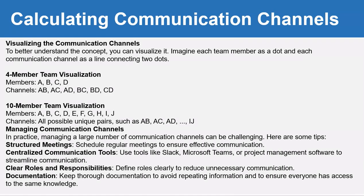To better understand the concept, you can visualize communication channels. Imagine each team member as a dot and each communication channel as a line connecting two dots. For a 4-member team (A, B, C, D), the channels are: AB, AC, AD, BC, BD, and CD. For a 10-member team (A through J), the channels are all possible unique pairs such as AB, AC, AD, and so on up to IJ.